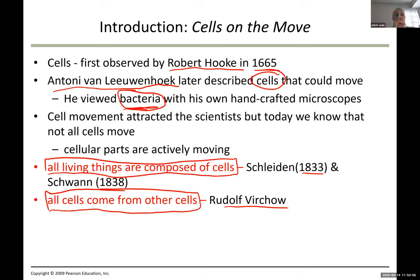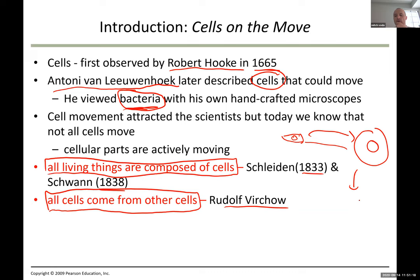Think about us as human beings — we're created from a sperm which fused with an egg. The sperm had its nucleus with chromosomes, the egg had its own. They fused and we end up with a cell containing 46 chromosomes. From that one cell, look at you — you end up as a very complex organism.